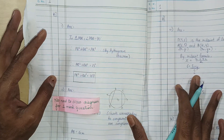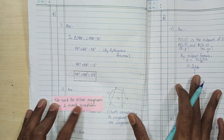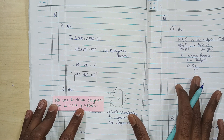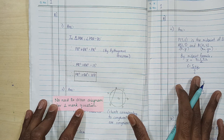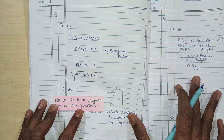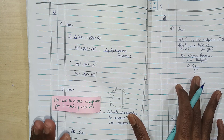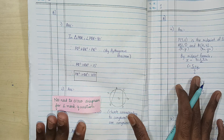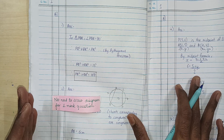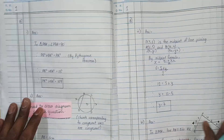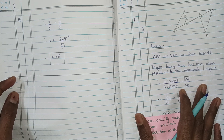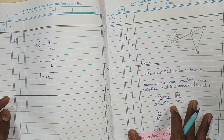Moving forward, on the second page you have one-mark questions. There is no need to draw a diagram for a one-mark question — drawing a diagram for a one-mark question is completely a waste of time, unless it is specifically asked of you.